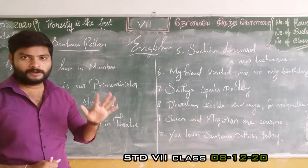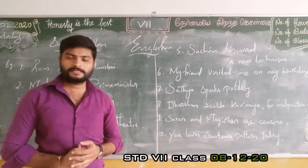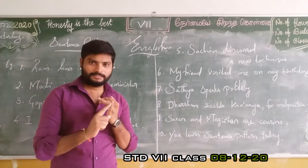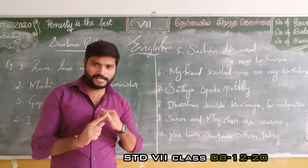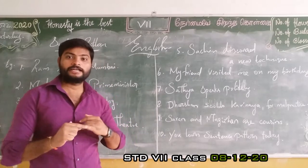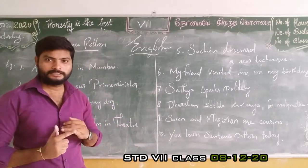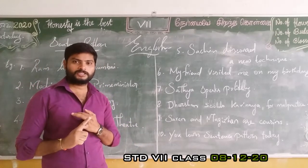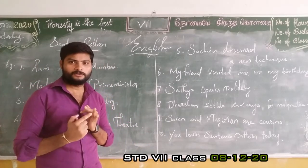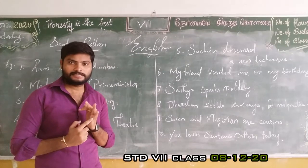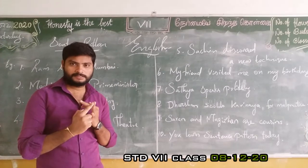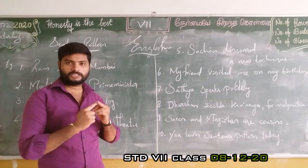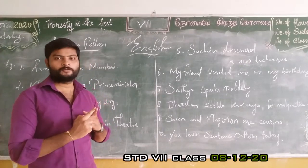There are five components in basic. Subject — the doer of the action, the head word. Verb is the action word; it denotes three things: position, action, and state of being.